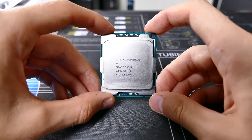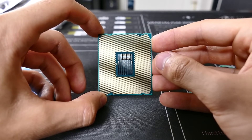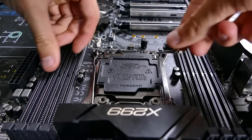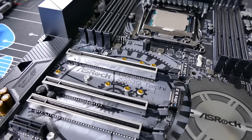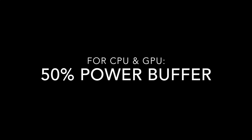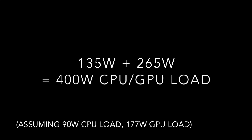The i9-7900X was a notorious power hog, but lower core count chips manage power more civilly, which is what most consumers will use. As a general rule of thumb, I recommend at least a 50% load power consumption buffer for your CPU, unless your reference is already showing overclocked consumption. So for our example, multiply 90 watts by 1.5 for a 135-watt overclock buffer, giving our Ryzen 1600/GTX 1070 combo a total of 135 watts plus 265 watts — a 400-watt total. A proper 400-watt PSU could technically handle it, but it is not recommended.